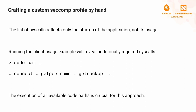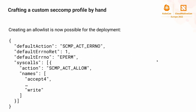Actually using the application triggers different code paths and is crucial for this overall approach. With the collected syscall list, we create an allow list profile - using a default action of error out, optionally specifying the error return code such as `EPERM` or `ENOSYS`, and then specifying the list of allowed syscalls. Blocking everything by default and maintaining an allow list is always the more secure approach.